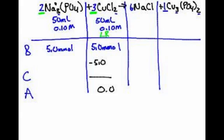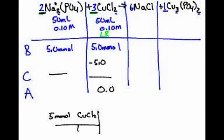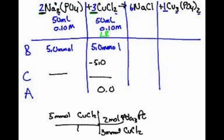So now we have to figure out how much this goes away. This is a little tricky because of this 3 to 2 ratio. I think it's better to understand it dimensionally. So if you have 5 millimoles of CuCl₂ over 1, then you can say there are 3 millimoles of CuCl₂ to 2 moles of Na₃PO₄. Those are the coefficients from the balanced equation — that's our mole ratio. And so you simply convert from millimoles to millimoles and you get 3.33. So this will be minus 3.33.